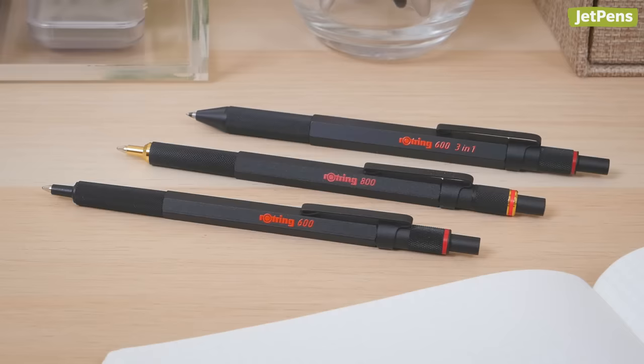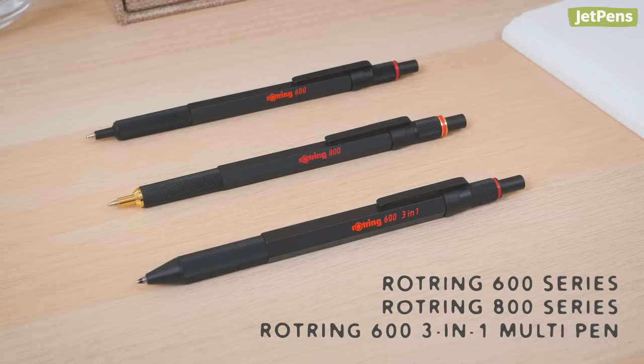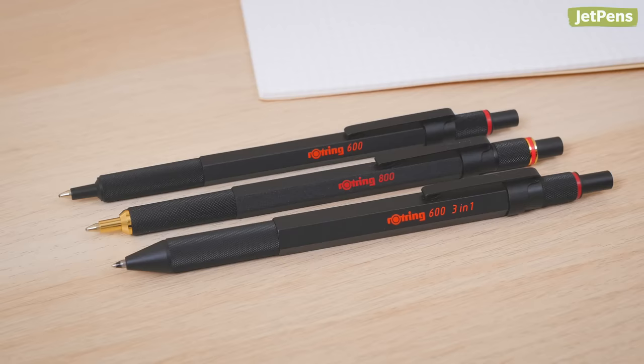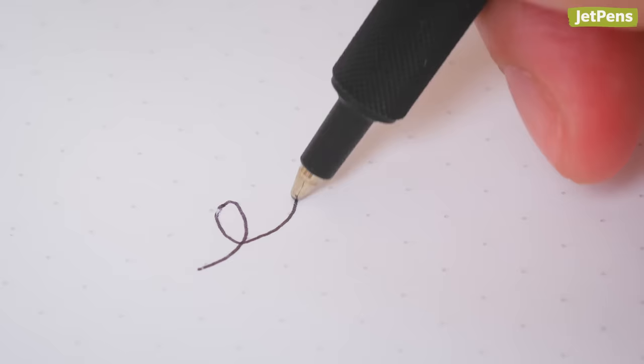Holtzring's impressive ballpoint lineup includes the iconic 600 series, gold-accented 800 series, and a handy 3-function multi-pen. Their pens are made with hefty yet elegant all-metal brass bodies. Their ink refills aren't advertised as low viscosity, but they're still smooth and easy to write with.